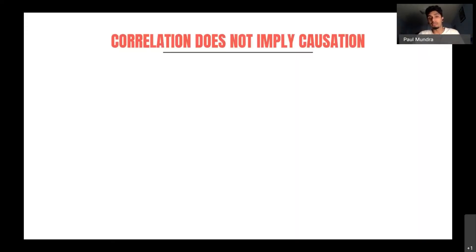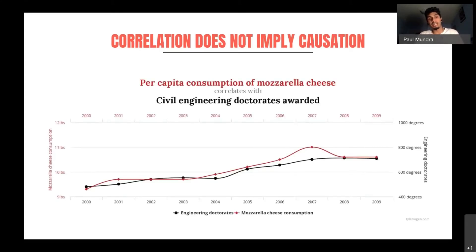One thing we also want to emphasize is that correlation does not imply causation. Just because two things happen at the same time does not mean that one leads to the other. To know about causation, we need high quality randomized control trials. For example, the per capita consumption of mozzarella cheese is correlated with civil engineering doctorates awarded — but mozzarella cheese does not create civil engineers. These two things just increase at the same time: they're correlated, but there is no causal relationship.